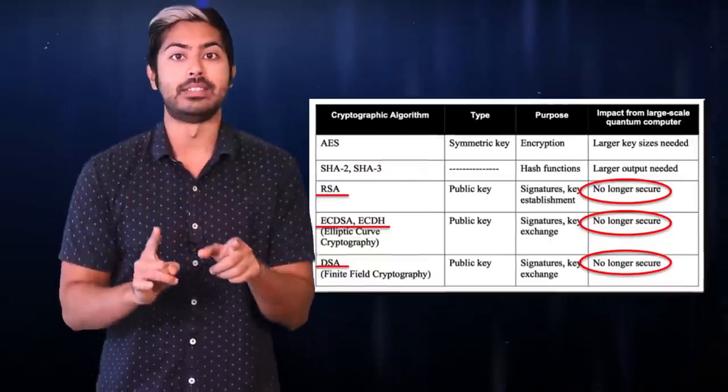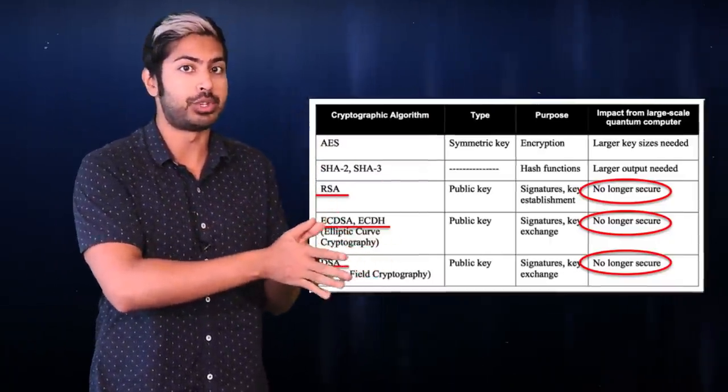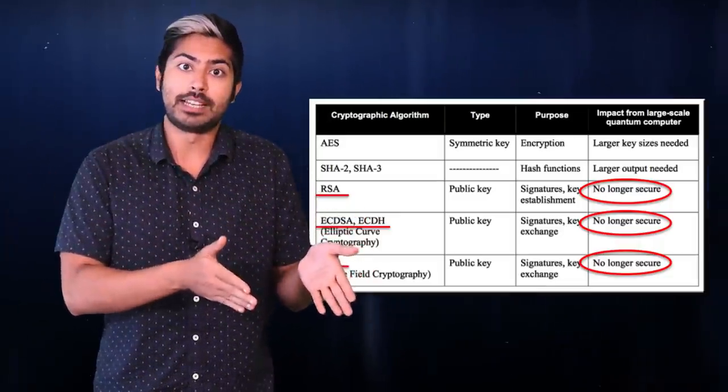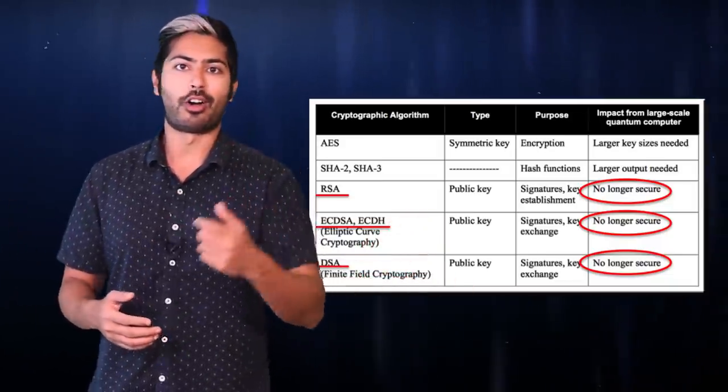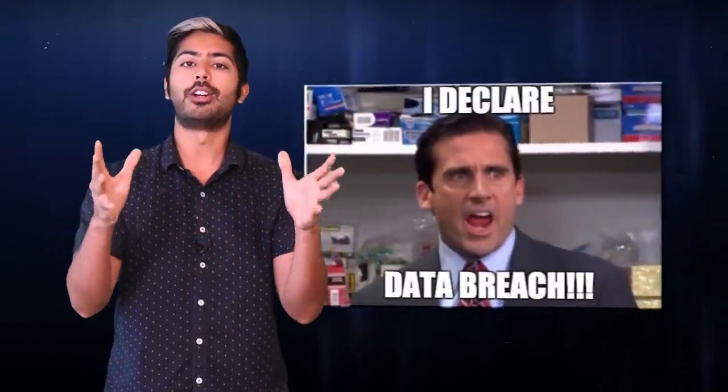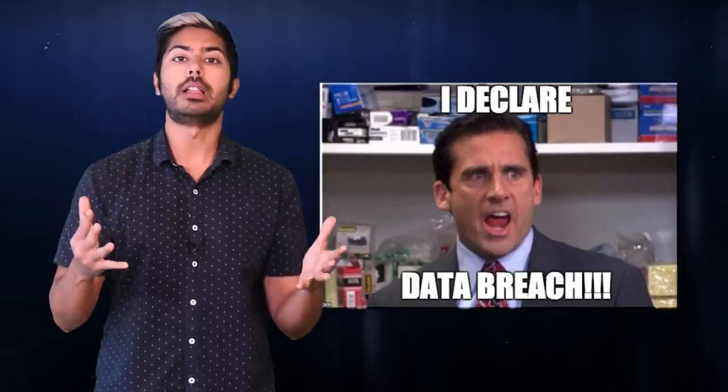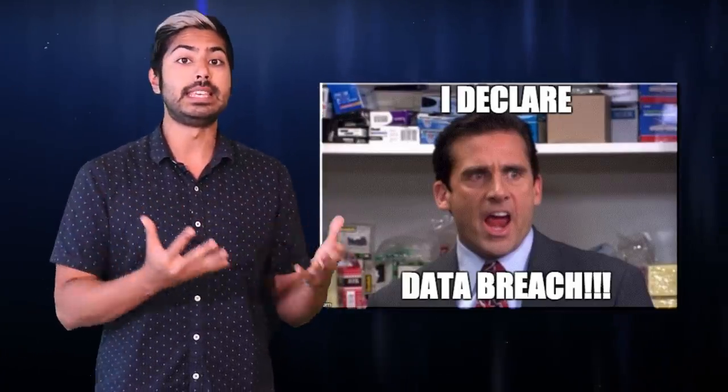And when that happens, quantum computers will only be able to break some types of encryption, not all of them. But it turns out that those types include most of what we currently use to secure the internet. RSA, Diffie-Hellman, Elliptic Curve Crypto, and more. So security enthusiasts, we heart you, and you are needed. We need to develop new types of quantum-resistant algorithms to prevent these types of attacks.